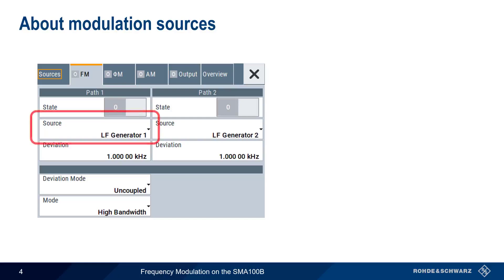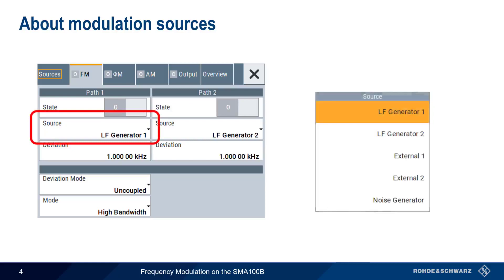A number of different modulation sources can be used with the SMA-100B. Some of these sources are internal to the instrument, and some are external. Internal sources of modulation include the two LF, or low-frequency generators, as well as the noise generator. We'll start by looking at internal FM modulation sources.